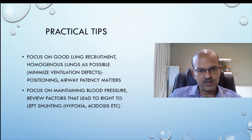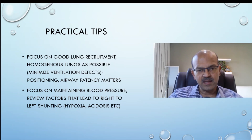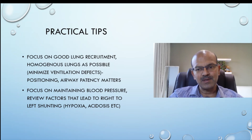Focus on maintaining perfusion by keeping blood pressure and fluid status optimized. Review the factors that can lead to right-to-left shunting — hypoxia, acidosis, infection — and correct them. As I said, this is not a detailed lecture on ventilation perfusion; it's just to give you an idea of what it is and how you can manage it to some extent. I hope it helps — do share, thank you.